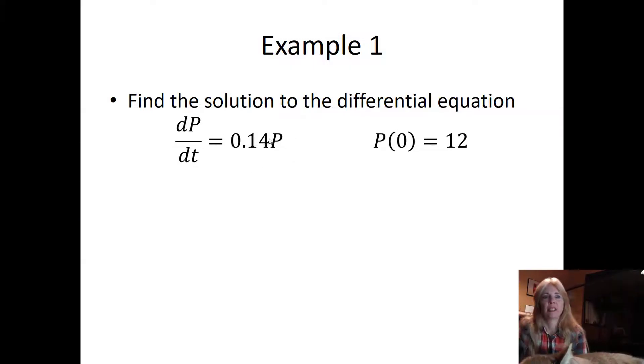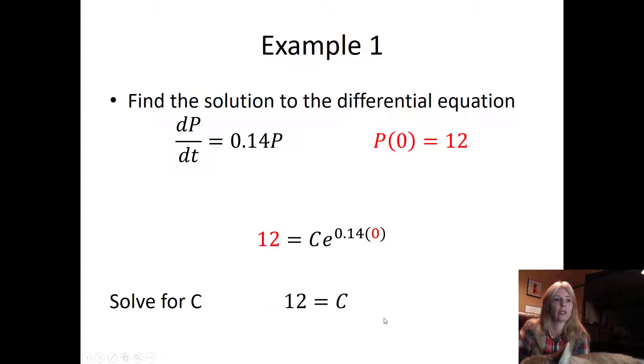All right, we want to find the solution to this differential equation. As I can see, it's in that k times constant of proportionality times my dependent variable, meaning my function. This is giving me an initial amount so I can solve for the constant. First thing I do is put it in that Ce^(kt), so my k becomes 0.14. Then I plug in t equals 0, set my equation equal to 12, and solve for C. e^0 is 1, so C equals 12.